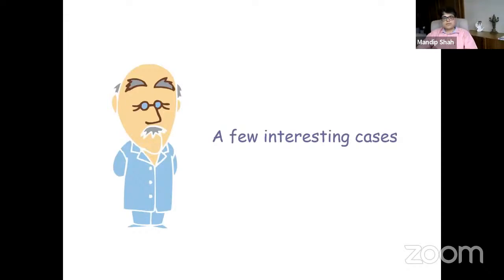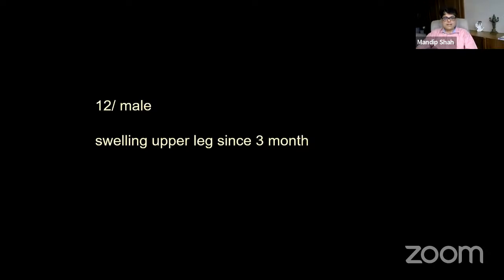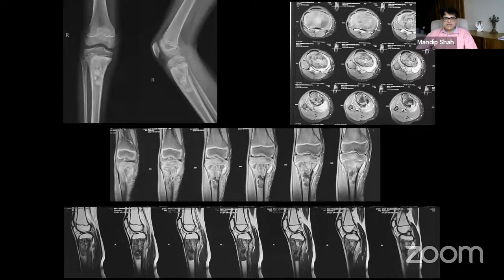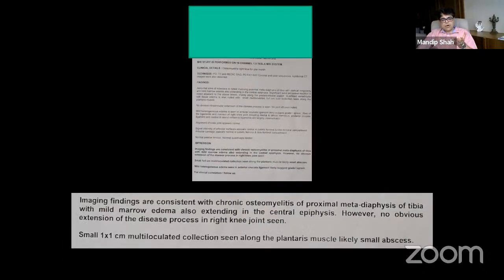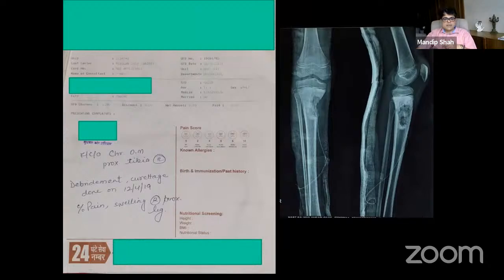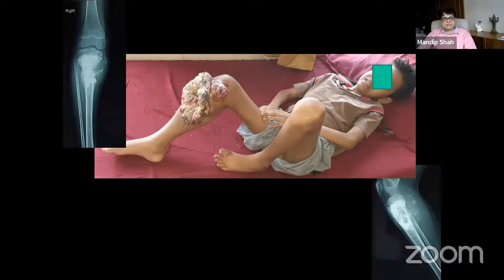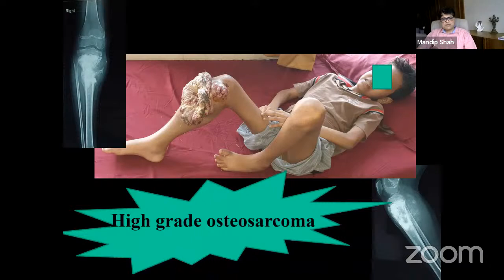Before I go there, let me take you through some interesting cases. This is a 12-year-old male with a swelling in the upper leg for three months. The x-ray showed an aggressive, sinister-looking lesion in the upper tibial metaphysis with soft tissue extension. The radiologist thought this was osteomyelitis, and the orthopedic surgeon did a debridement and curettage without sending it for biopsy. The patient presented to me six months later with multiple metastases all over his body. This patient succumbed despite palliative amputation — this was a high-grade osteosarcoma.